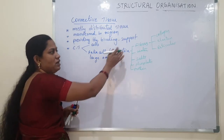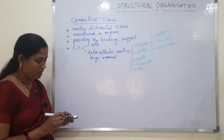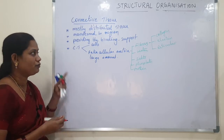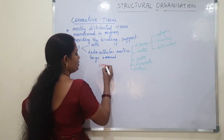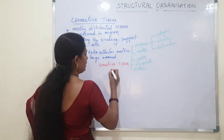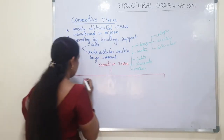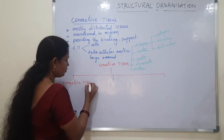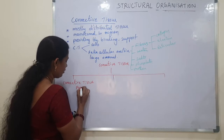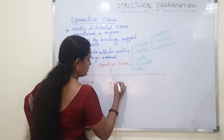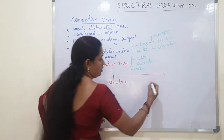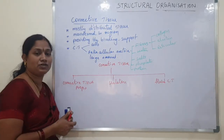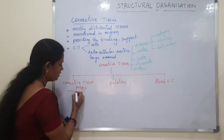Now let us see the classification of connective tissue. Connective tissue is basically divided into three types: first, connective tissue proper; second, skeletal connective tissue; and third, fluid connective tissue.